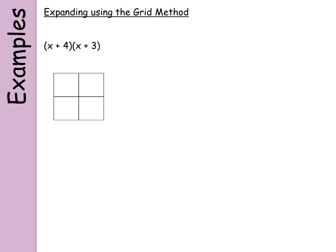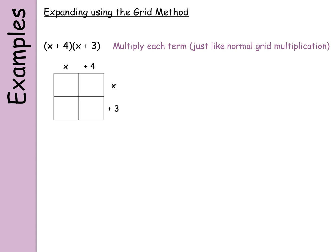Split each bracket so it's over the grid. You can see I've split the x plus 4 bracket so I've got the x over the first box and the 4 over the other box. Do the same with the other bracket so I've got x there and plus 3 there. Now I'm going to multiply each term — each bit of algebra — just like normal grid multiplication.